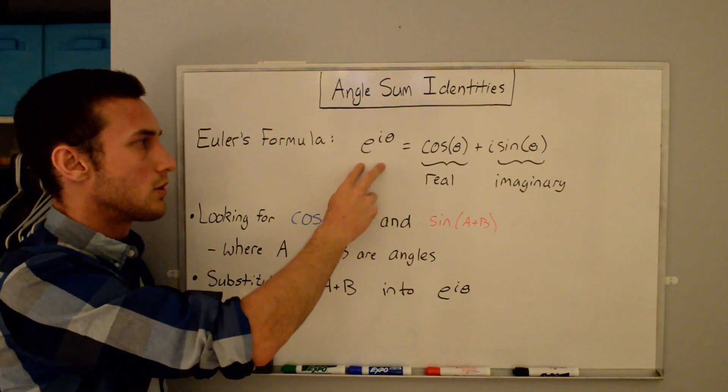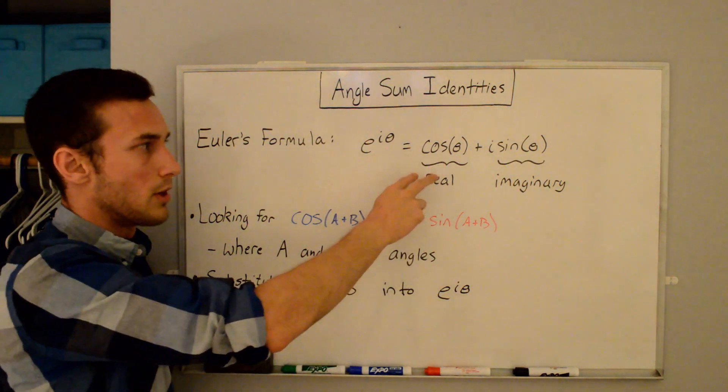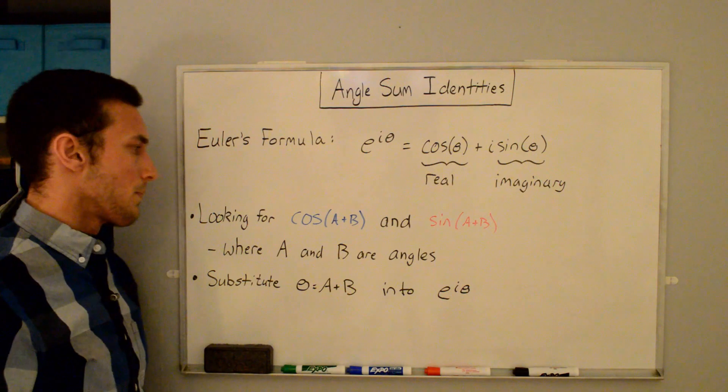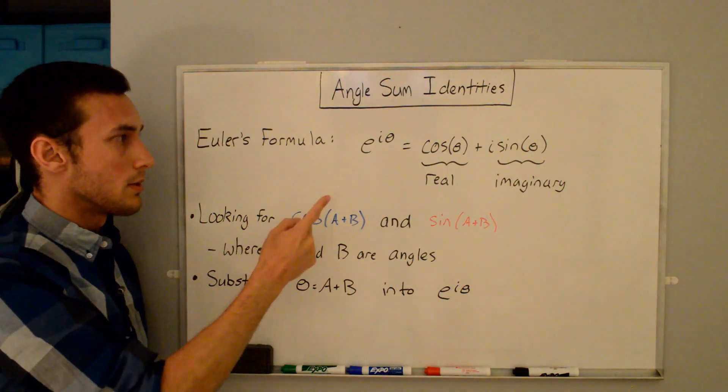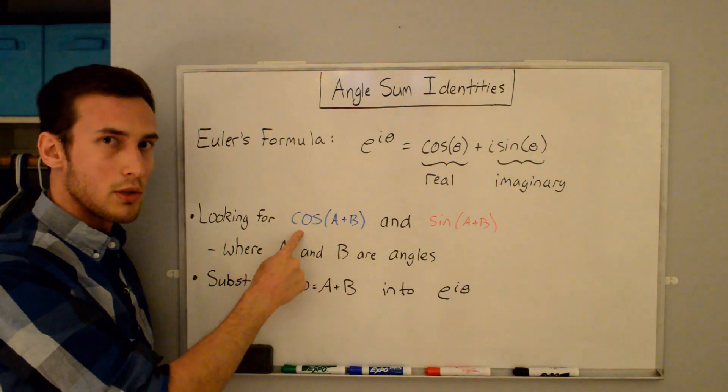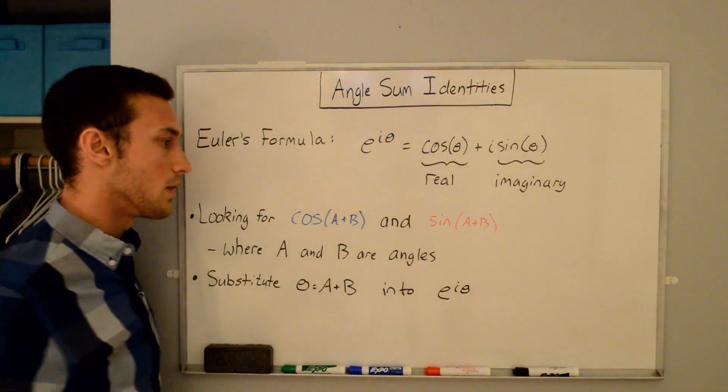So it's relating the exponential to the trigonometric functions cosine and sine. And so what we're looking for are the angle sum identities. The first one is cosine of A+B, and the other is sine of A+B.